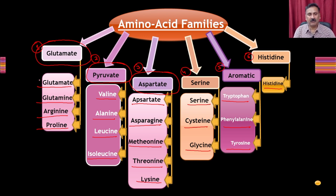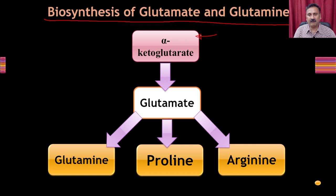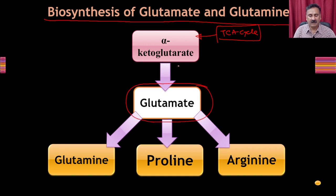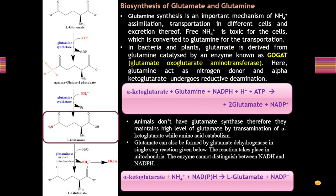Let's look at the biosynthesis of glutamate and its derivatives such as glutamine. Alpha-ketoglutarate is obtained from the TCA cycle and is converted into glutamate, which is then converted into glutamine, proline, and arginine. The glutamate is synthesized from alpha-ketoglutarate. In bacteria and plants, glutamate is derived from glutamine via the enzyme GOGAT — glutamine oxaloglutarate aminotransferase — where glutamine acts as a nitrogen donor and alpha-ketoglutarate undergoes reductive amination.